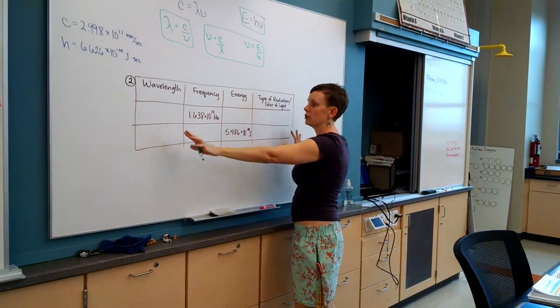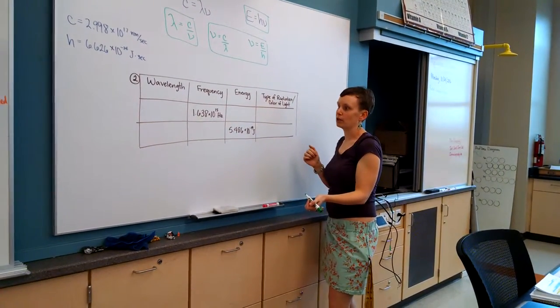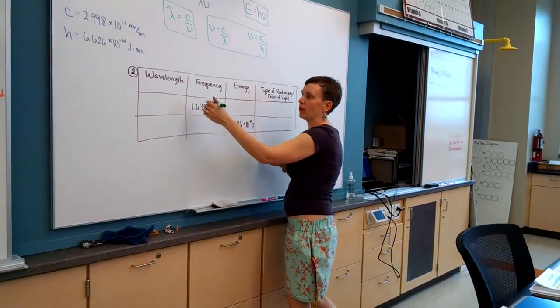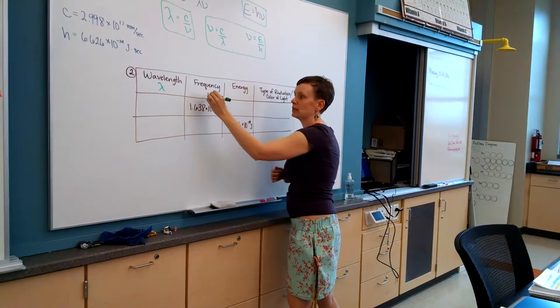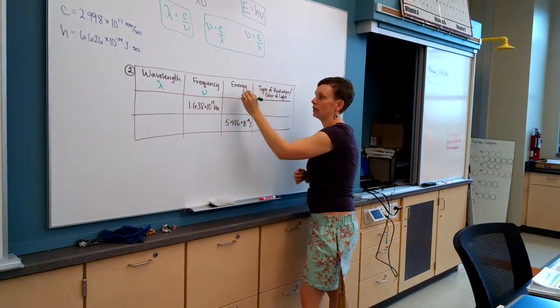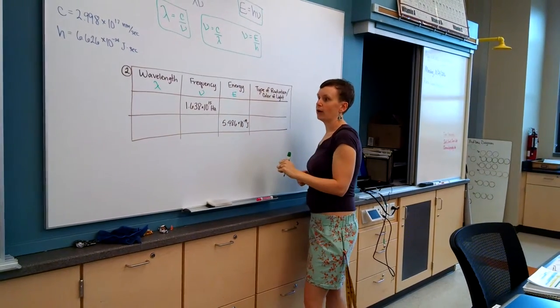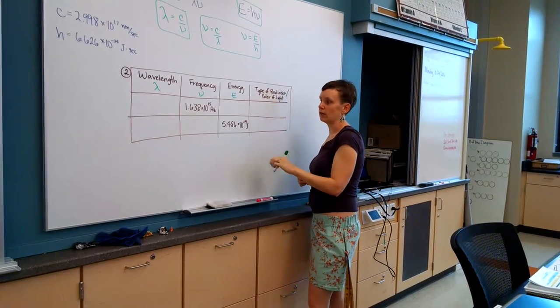I'm going to do the first two rows of the table for pre-lab question number two. Remember, our wavelength is the lambda symbol, frequency is this symbol, energy is capital E. If you have one of those, you can solve for the rest of the information in the table.